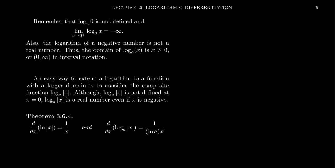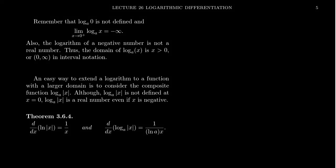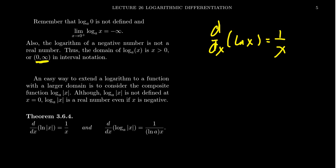In our previous video, we learned that if we want to take the derivative with respect to x of the natural log of x, this is going to equal 1 over x. But it's important to remember that the natural log of x has a restricted domain. The domain of the natural log of x is just going to be zero to infinity, where zero is not included.